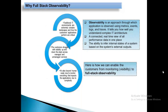This is about how the digital world would be there and why we need full stack observability. When we talk about observability, it is a practice, method, or approach through which you are going to observe the application using metrics, events, logs, and traces. You may ask: what is the difference between monitoring and observability? Monitoring simply says what's going on, whereas observability says why it happened - why the failure happened.